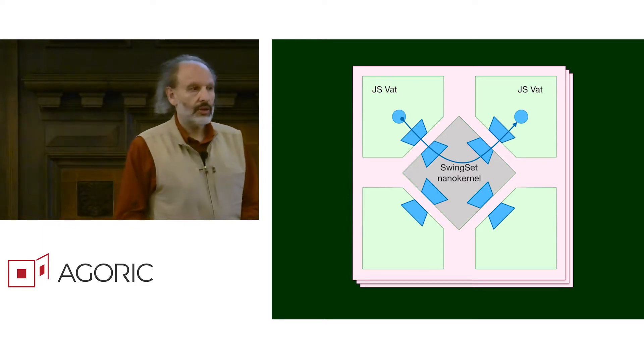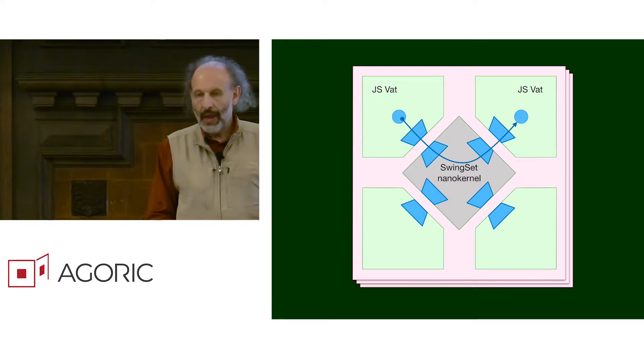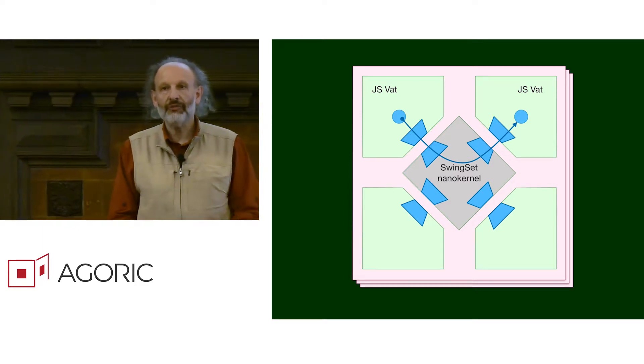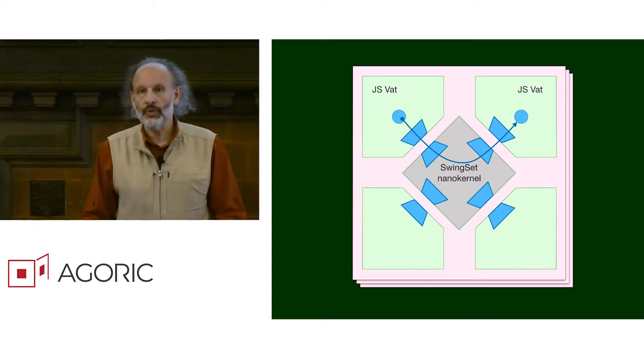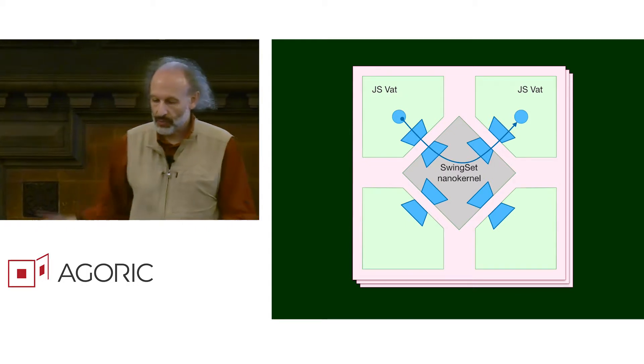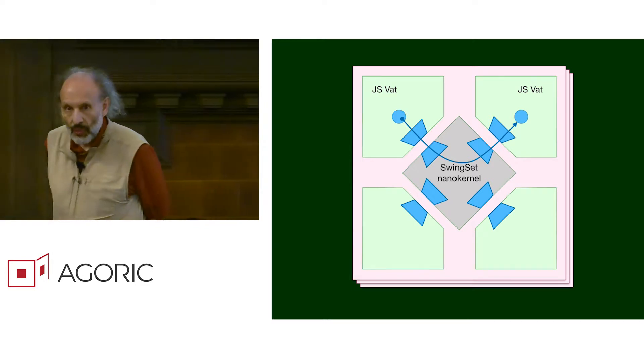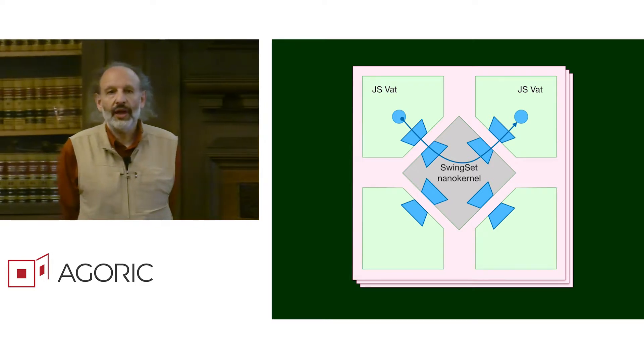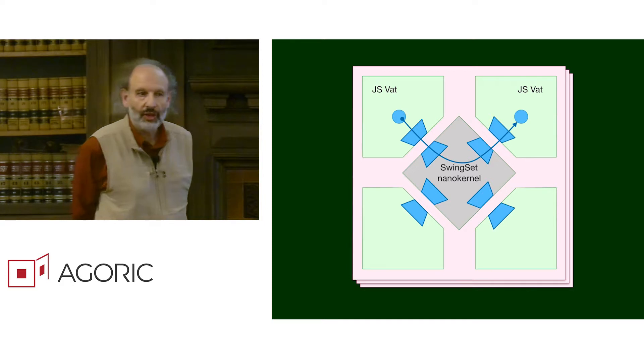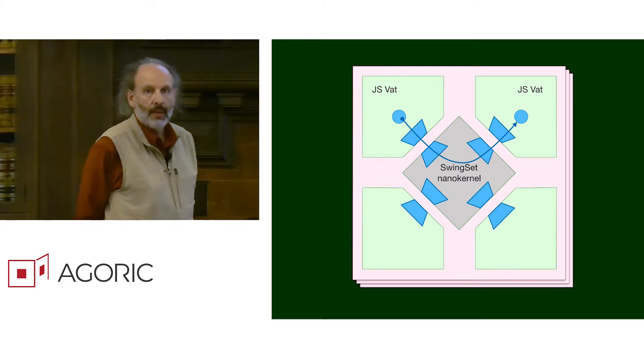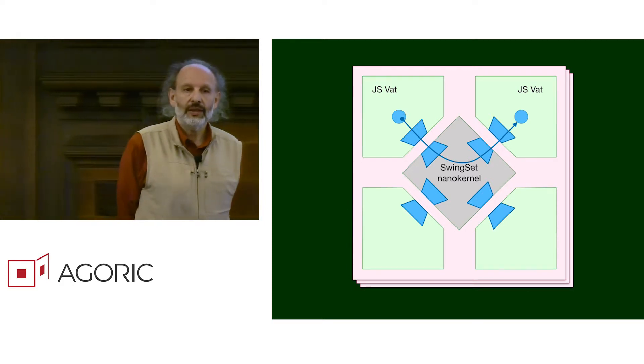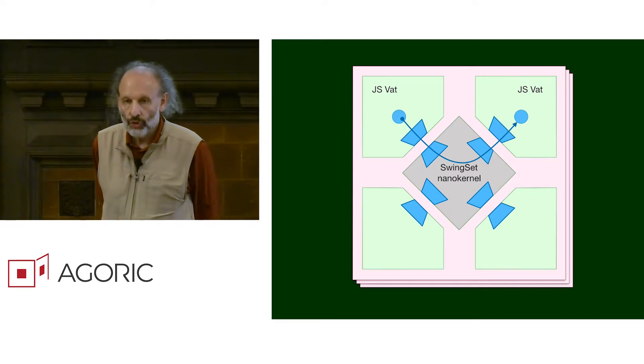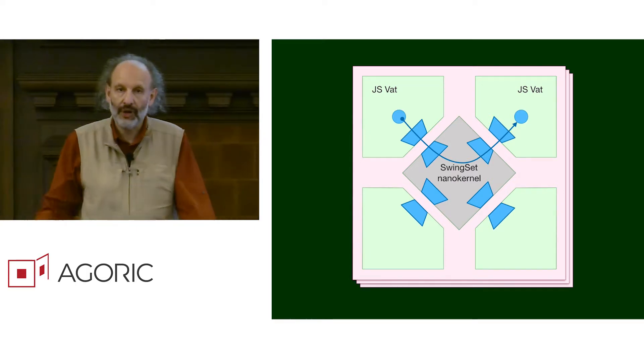How is it that an object in one VAT can effectively hold a capability to an object in another VAT? Well, these trapezoids are what is called a C-list. Each trapezoid is a C-list which is a table mapping from integer indices to capabilities, to object references.